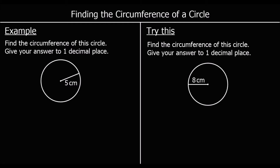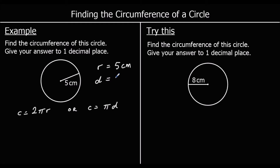Let's look at an example. The question says: find the circumference of this circle, giving your answer to one decimal place. We have a circle with a radius of five centimetres. We can use either formula. I'm going to use C = 2πr, so the circumference is two times pi times five.